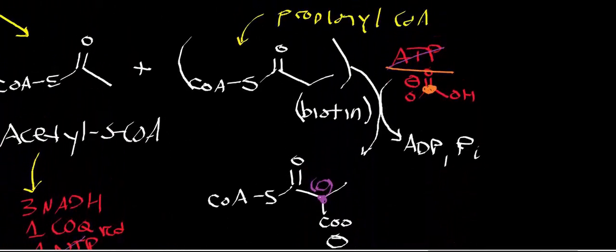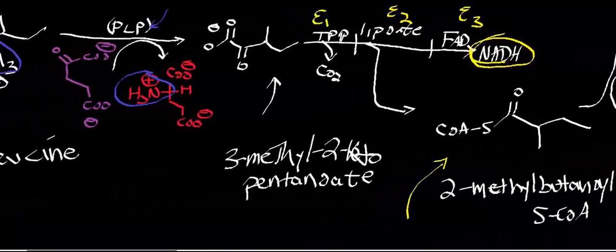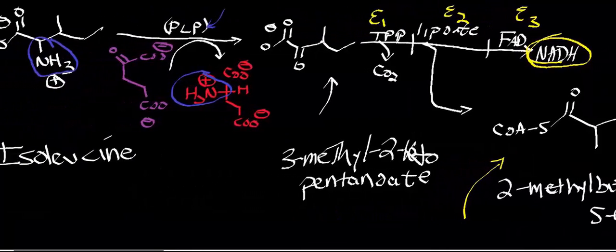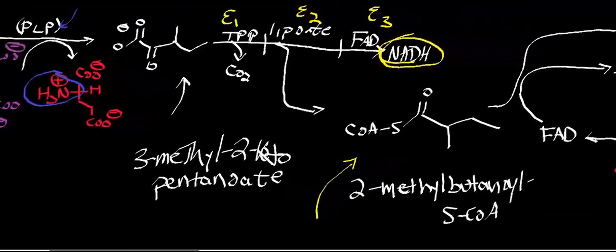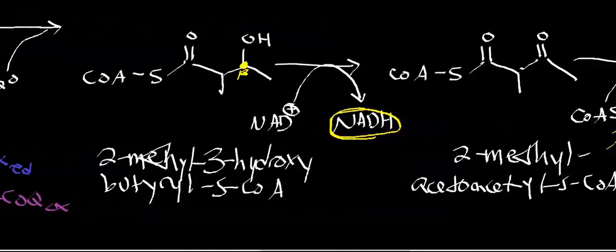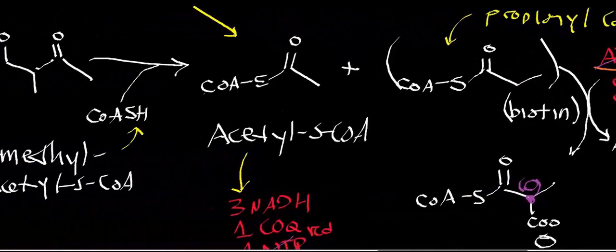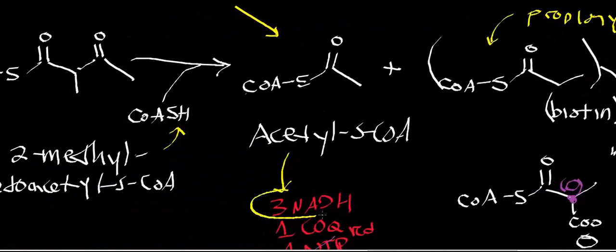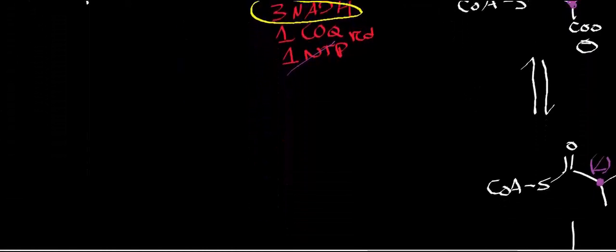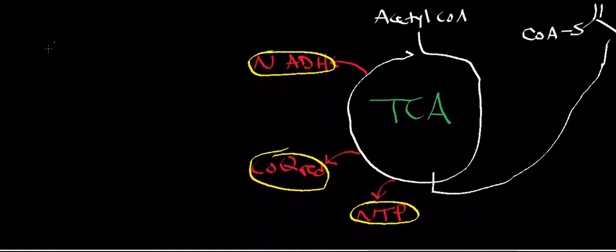Counting NADHs: one from the branched-chain alpha-ketoacid dehydrogenase complex, one from 2-methyl-3-hydroxybutyryl-S-CoA dehydrogenase, three from acetyl-CoA going through the TCA cycle, and one from succinyl-CoA entering the TCA cycle. That gives a total of six NADHs.